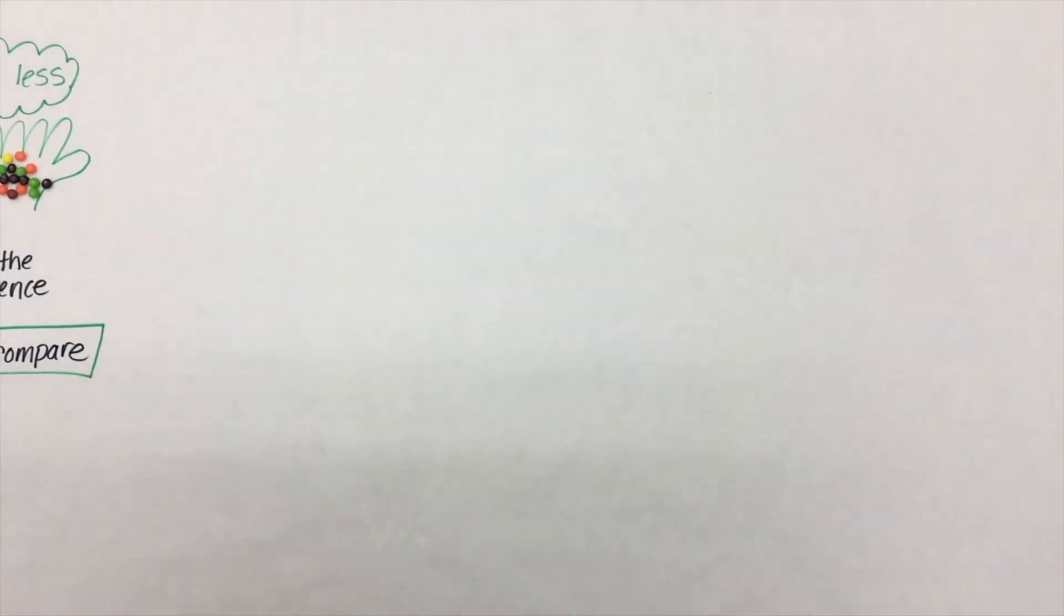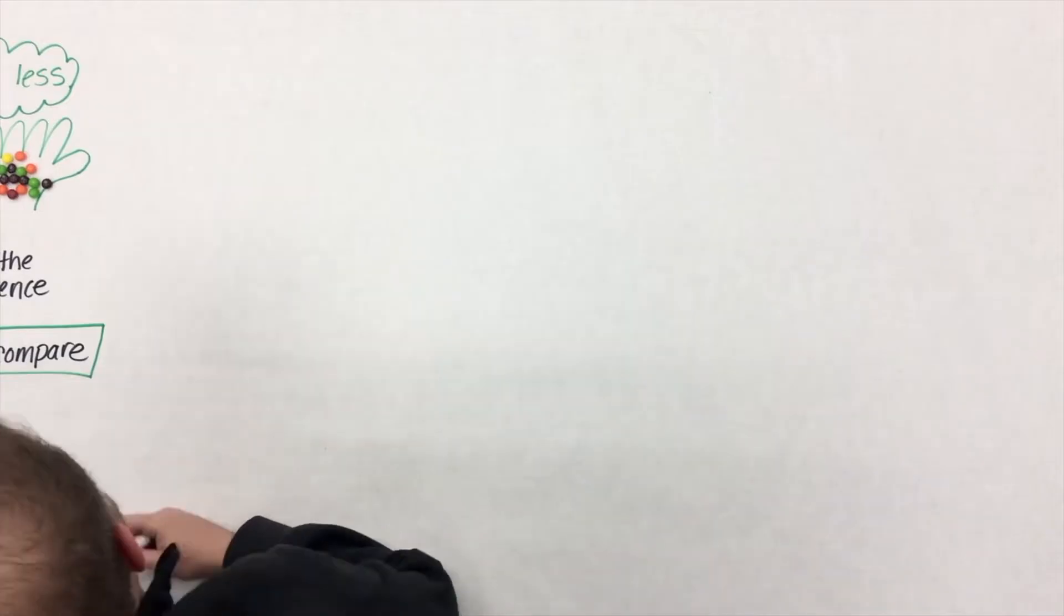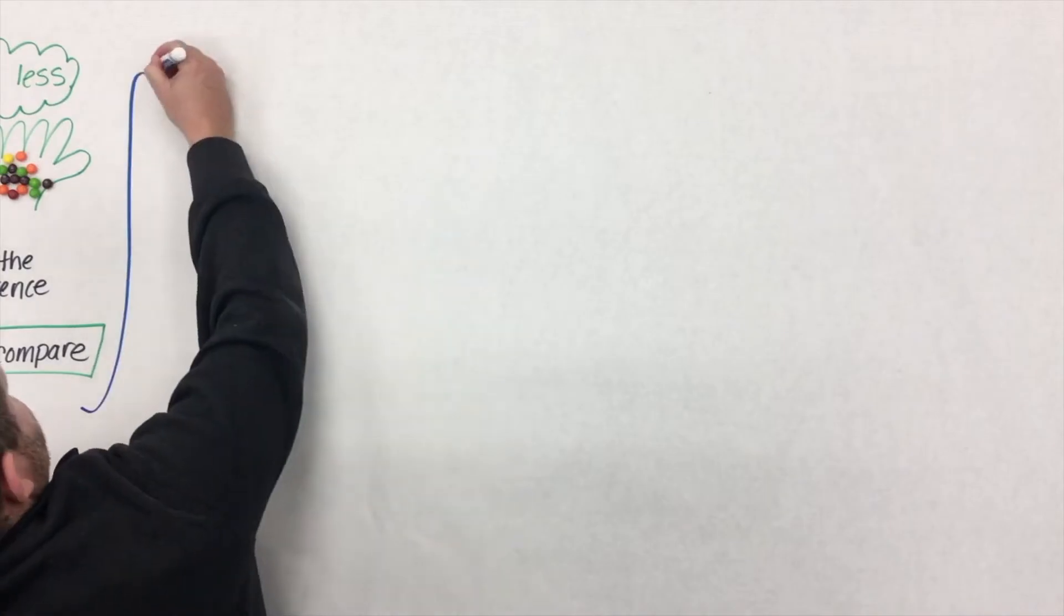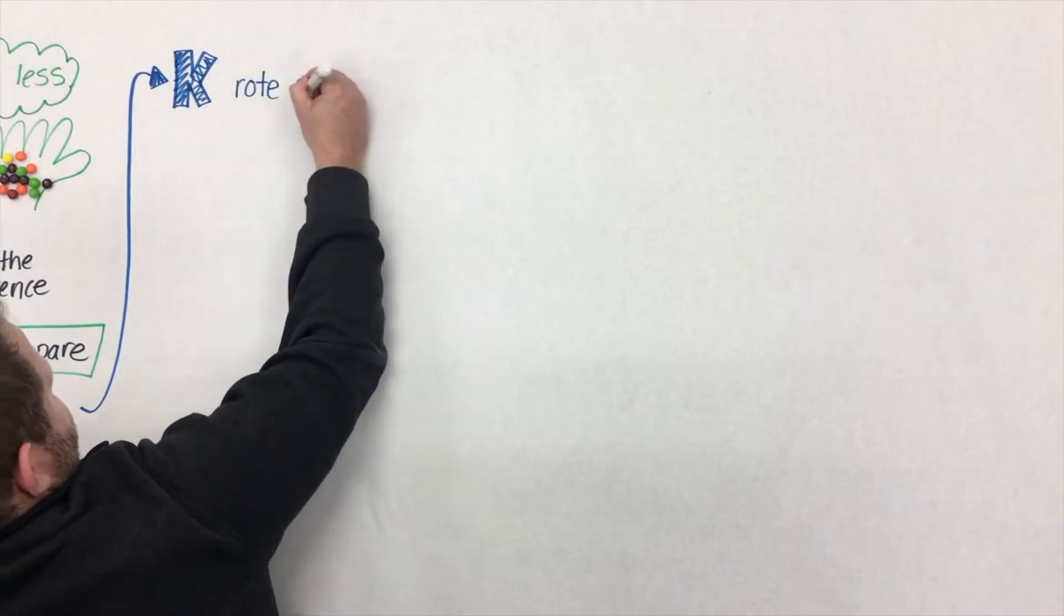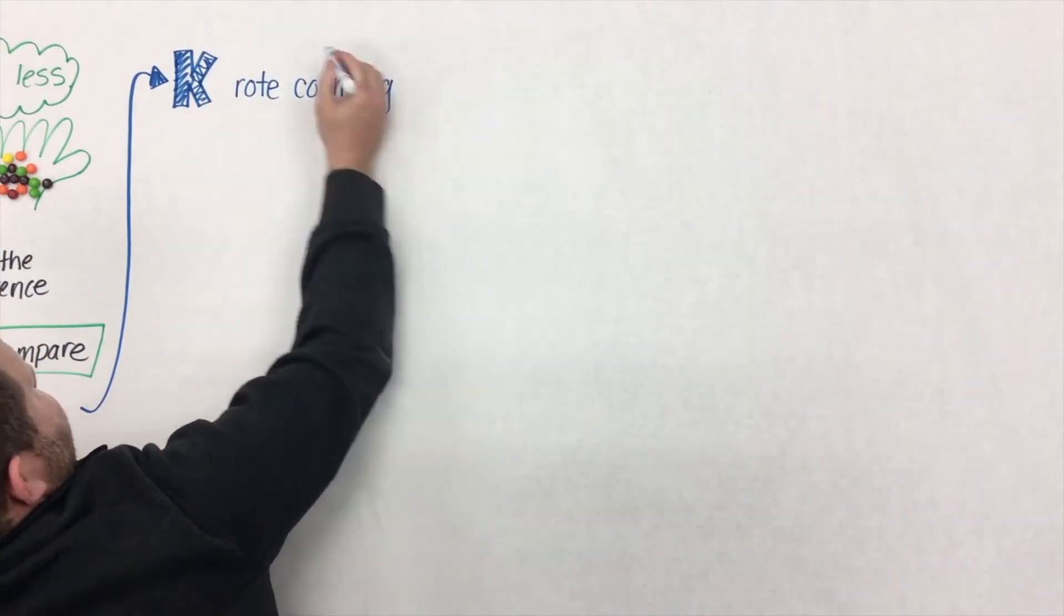So when students come to us in kindergarten, we now know that they have this idea of subitizing and more or less that they've been working on. So from there, we introduce rote counting. Rote counting, well, it's kind of like this.